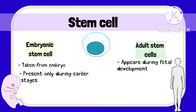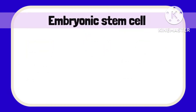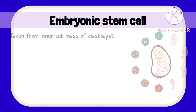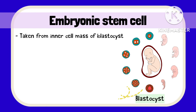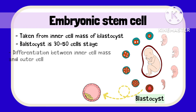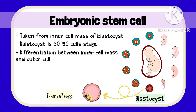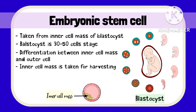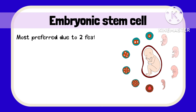Adult stem cells appear during fetal development but remain in our body throughout life. Embryonic stem cells are taken from the inner cell mass of the blastocyst stage — this is the 30 to 50 cell stage at which the zygote differentiates into an inner cell mass, which will further become the embryo, while the outer cell nourishes and protects it. Within four to five days after fertilization, the cells are acquired.